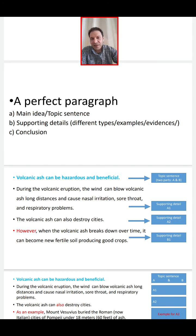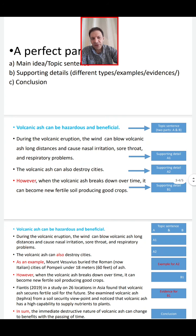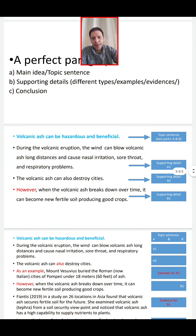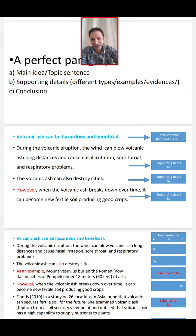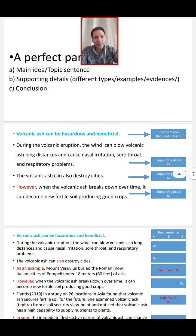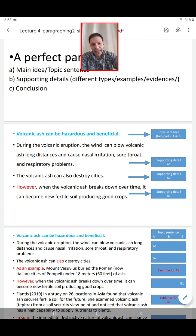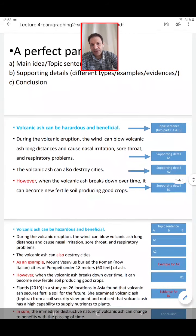But again, it doesn't mean that all of the paragraphs must have all of the features. I would like to talk about the previous paragraph. Volcanic ash can be hazardous and beneficial. This is the topic sentence. It has two parts, A and B.